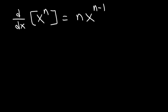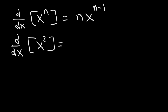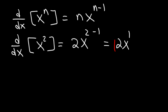So based on that formula, what is the derivative of x to the second power? In this case, n is 2. So it's going to be 2x raised to the 2 minus 1, or 2x to the first power. And so that's the answer for the first example.